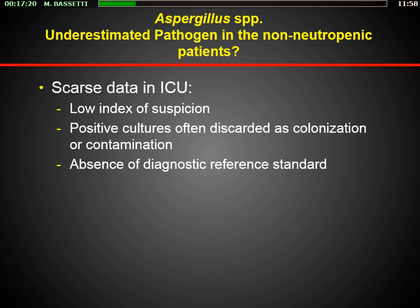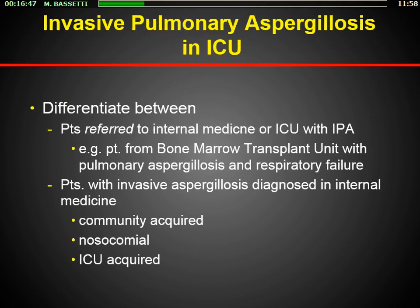What about data in the ICU? Unfortunately, data are scarce because of low index of suspicion, because positive cultures are often dismissed as colonization or contamination, and because there is an absence of diagnostic reference standards. We have a lot of standards for neutropenic patients — EORTC and the MSG group define diagnostic tools — but it is not easy to apply the same methods for ICU patients.